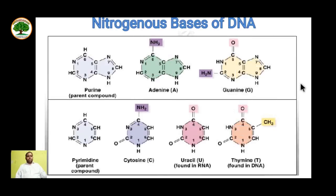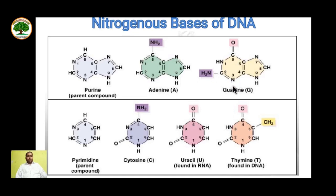Let's see the nitrogenous base structures. This is the parent structure of purine. When an amine group is added at the sixth carbon, it becomes adenine. When an amine group is added at the second carbon and oxygen is added at carbon number six, it becomes guanine.